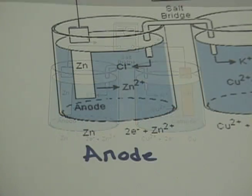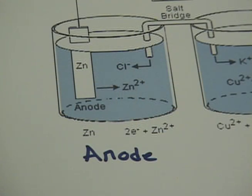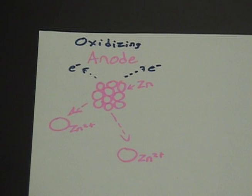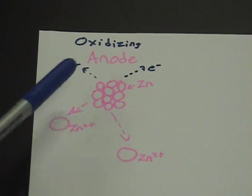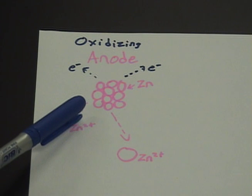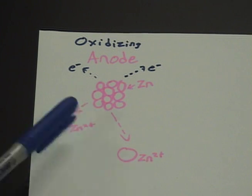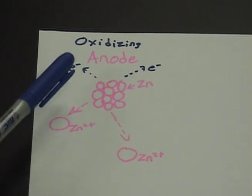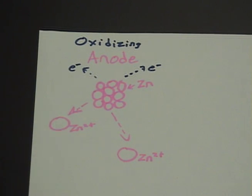The oxidizing metal, when it loses electrons, becomes an ion and goes into the solution. We can see here that the zinc metal is losing its zinc ions, which go out into solution, and its electrons go out as well.